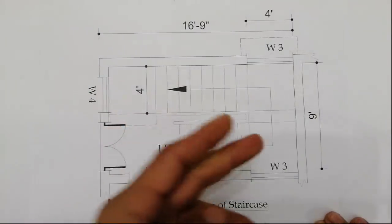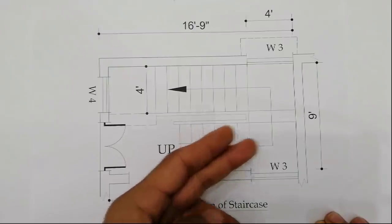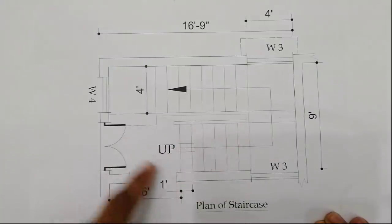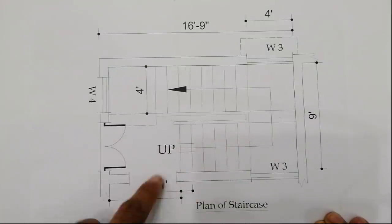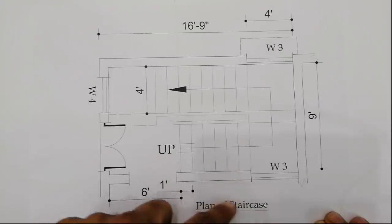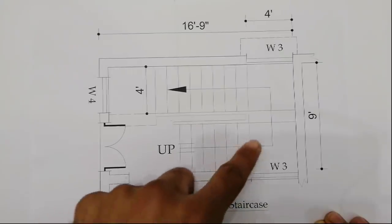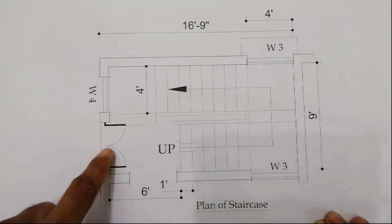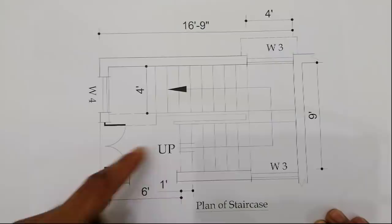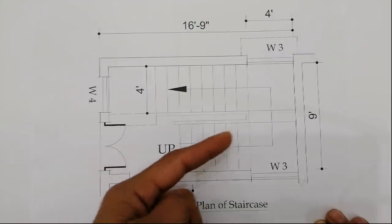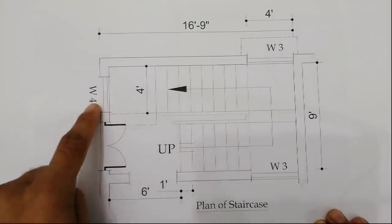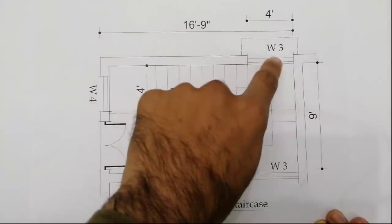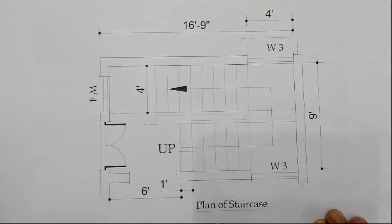Plan of staircase. If you see, dear friends, here we have two doors. One is the internal door for this house for which I designed this staircase, and the other is the external door. Here are also some windows — window 4, window 3, and another window 3.